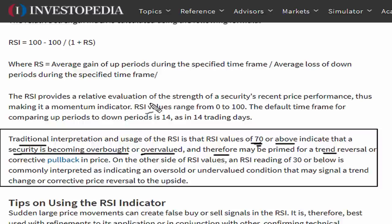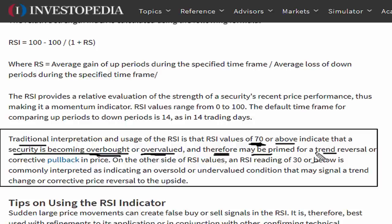So in other words, when you're coming into the market for the first time and trying to study the RSI, most of the resources — textbooks, online blogs, and pretty much most of the information you're going to come across — is going to steer you into believing that whenever the RSI moves above 70, you can expect that the instrument is overbought, overvalued, and may be primed for a trend reversal lower. I have been preaching that this is not true.